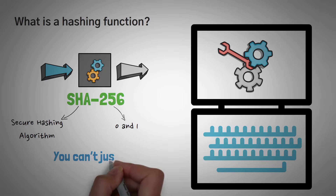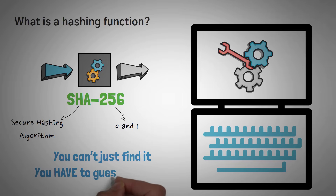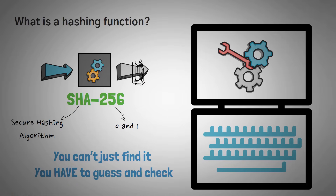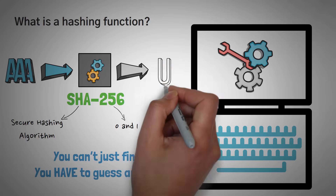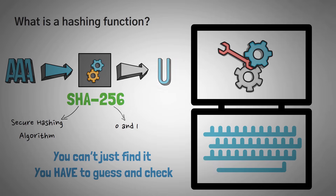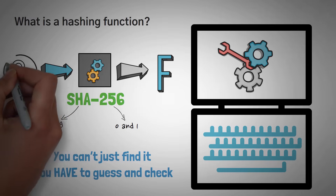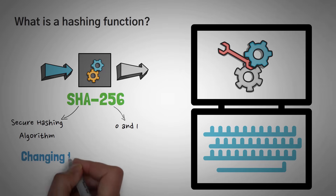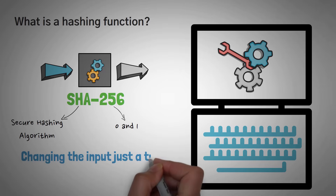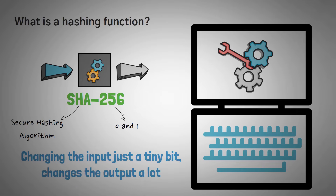Number one: you can't find the input of a hash — you have to guess and check. So if you give it A, it will give you D. Then if you give it AA, it'll give you J. And if you give it AAA, it'll give you U. Imagine if you wanted to find out what gave you an F — you'd have to just keep adding more A's until you found it. The second thing you need to know is that changing the input just a tiny bit changes the output a lot.